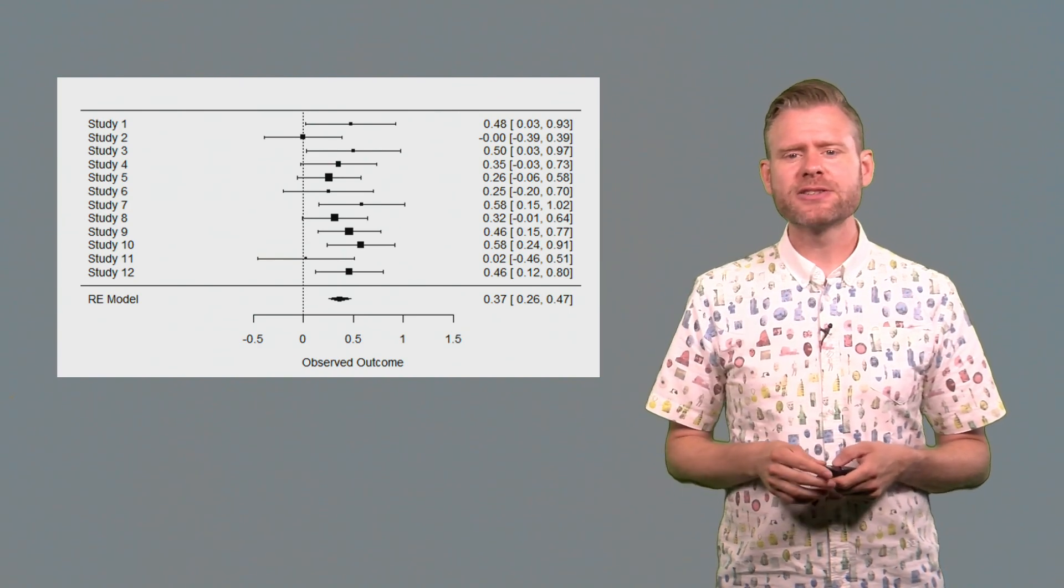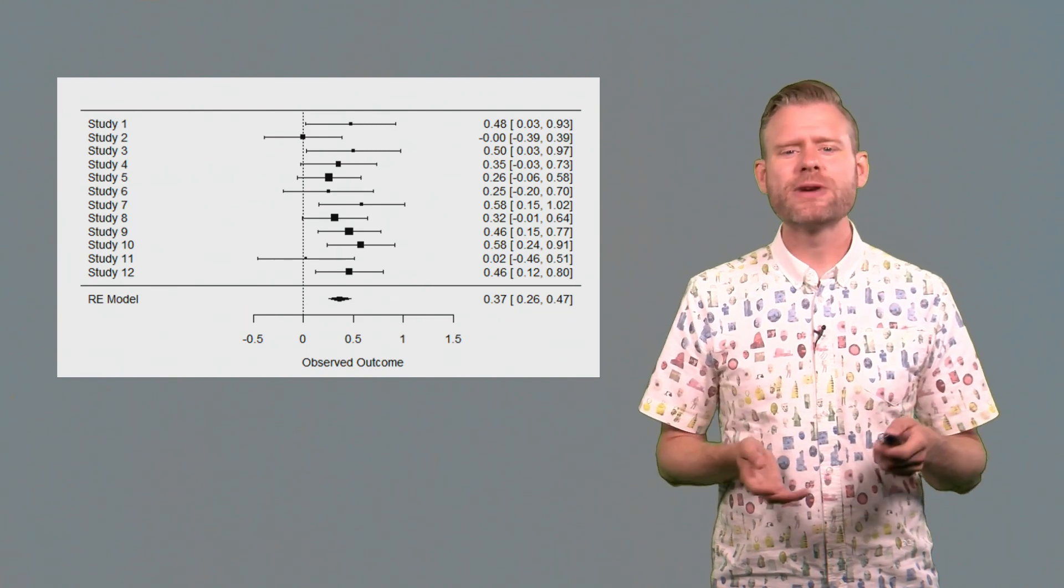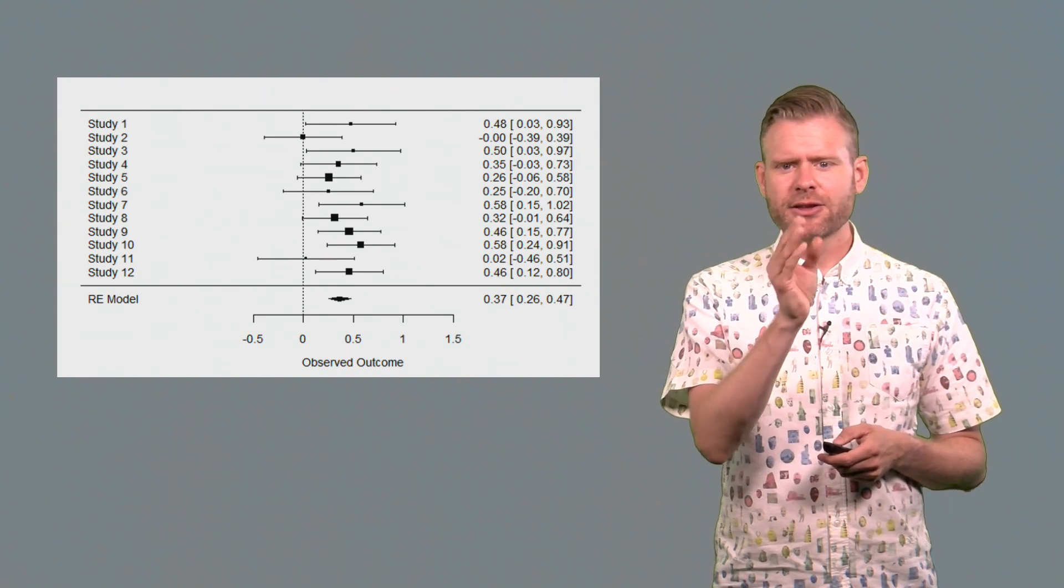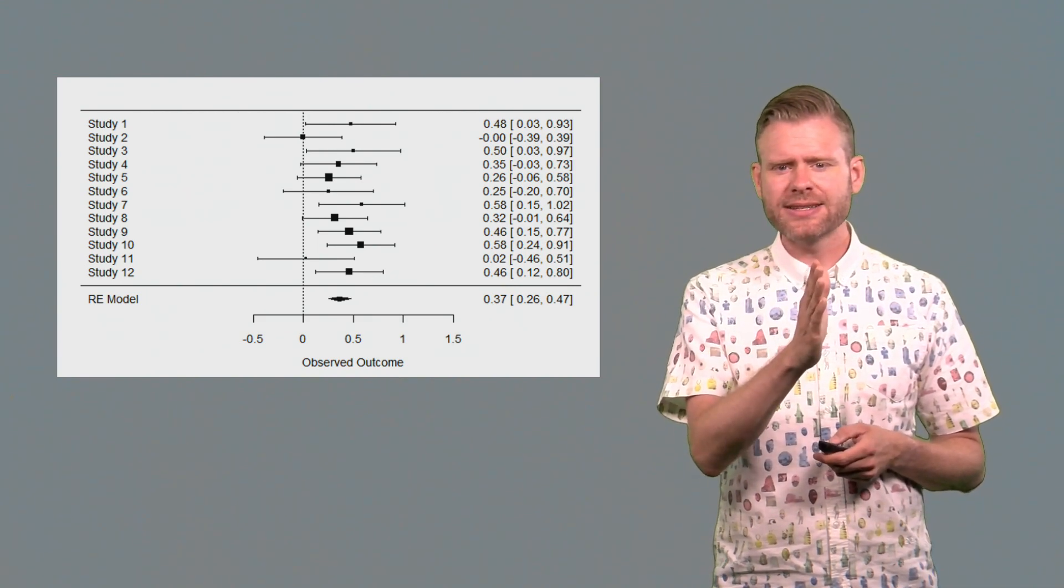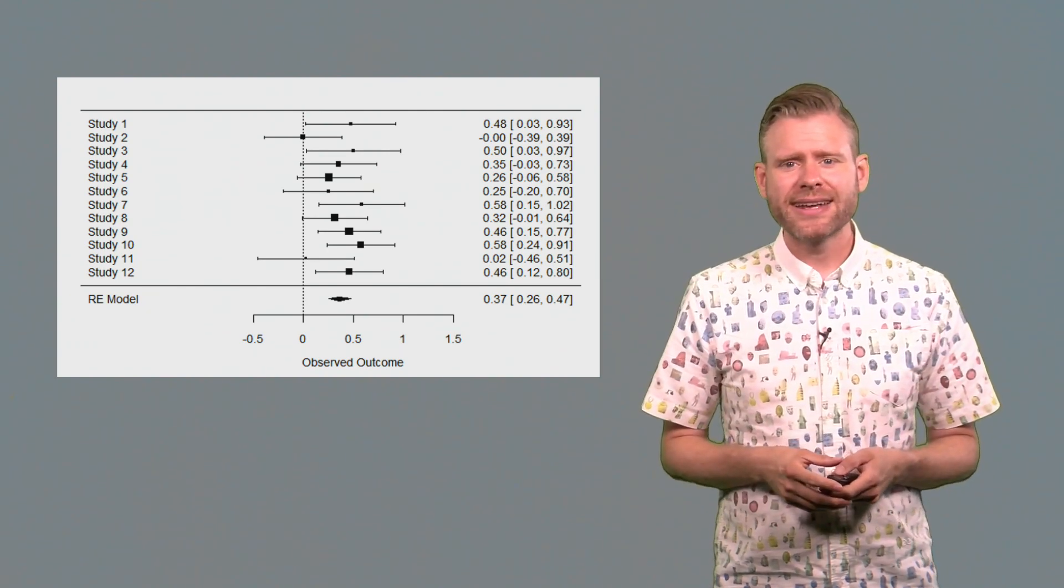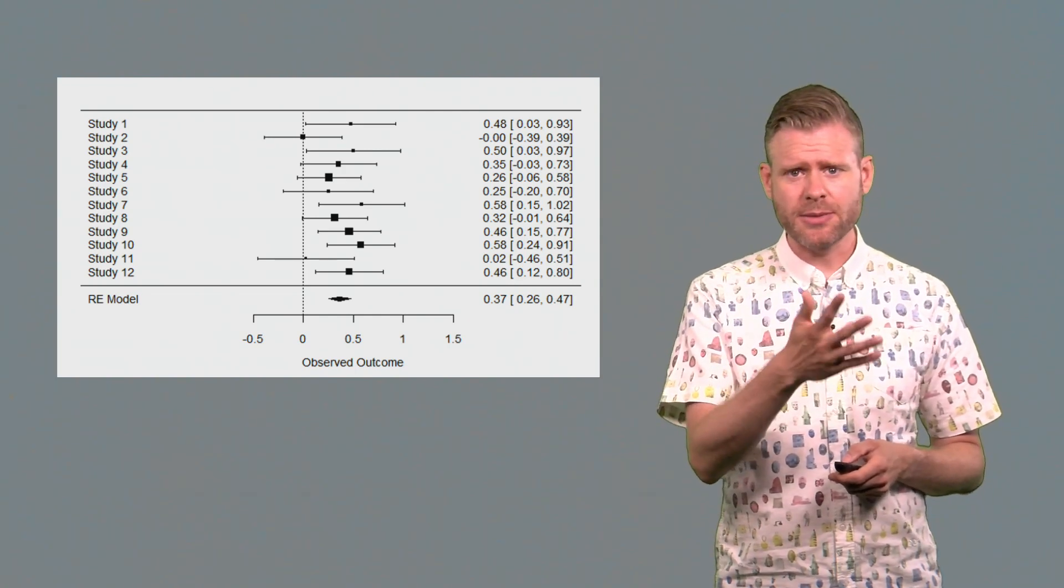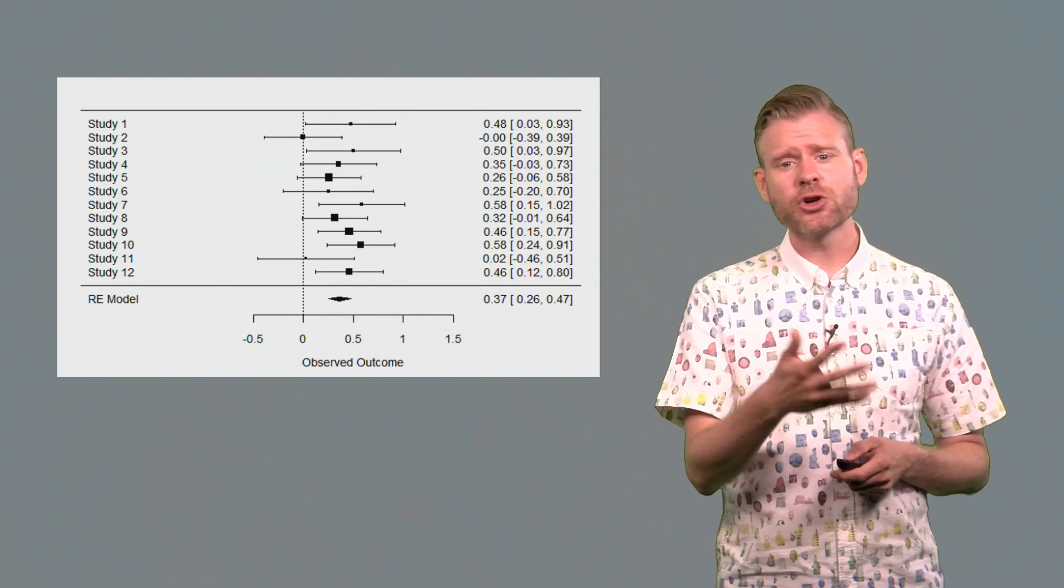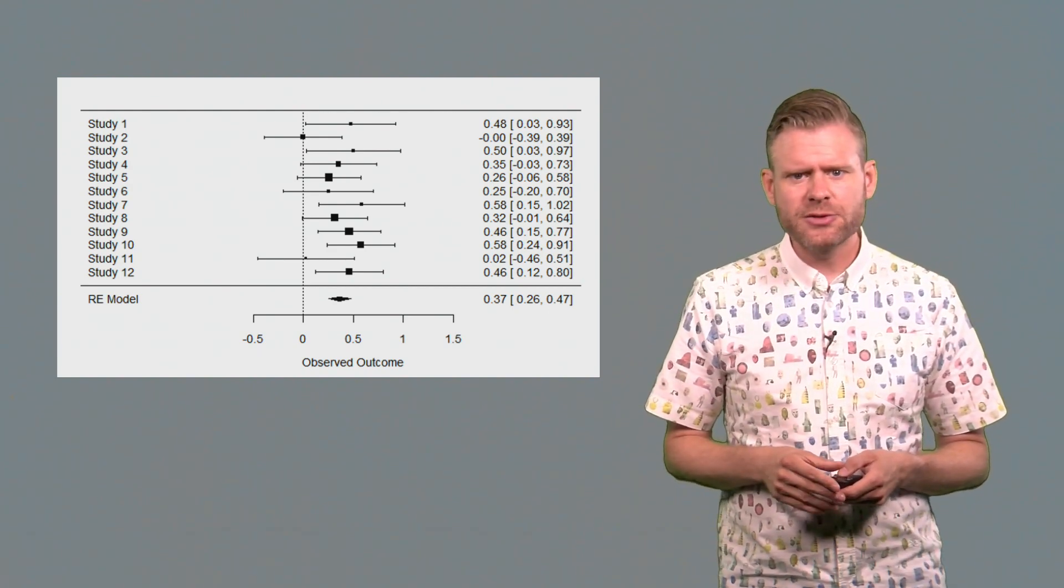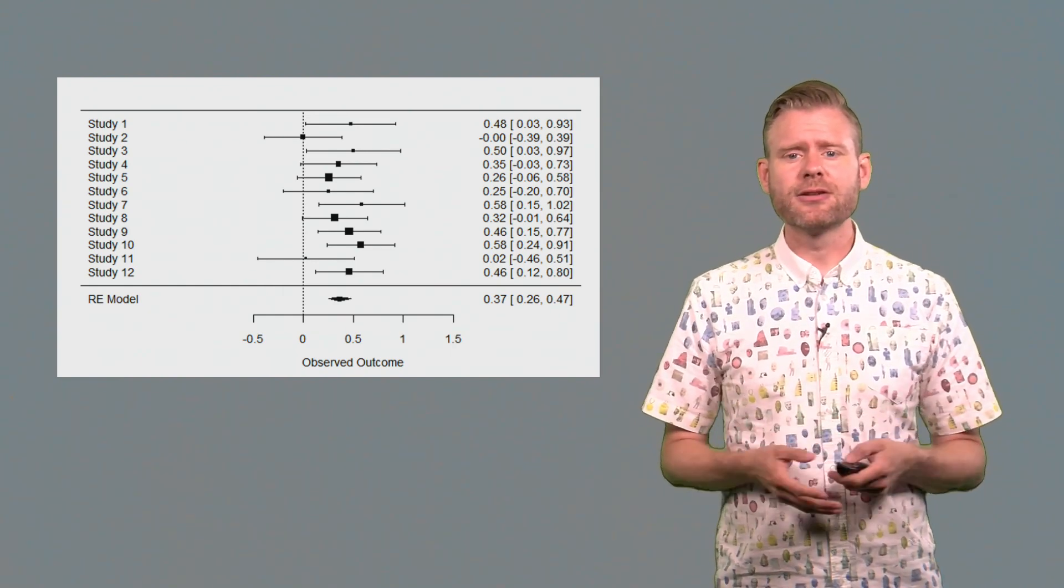Way at the bottom, we see next to the random effects model that there is something that should be a diamond, a slightly low resolution diamond, but nevertheless. The center of the diamond indicates the observed meta-analytic effect size, and the sides of the diamond indicate the width of the meta-analytic confidence interval. Here we see quite some variation across studies. Some are significant, some are not. Some show larger effects, some show smaller effects. But if we look at the meta-analytic effect size, we can clearly see that overall something is going on. We have good reason to reject the null hypothesis.